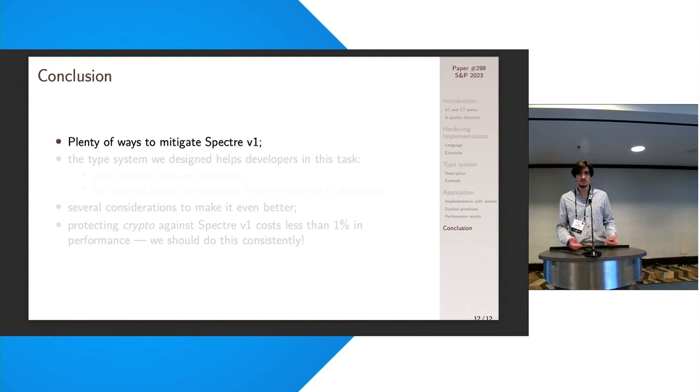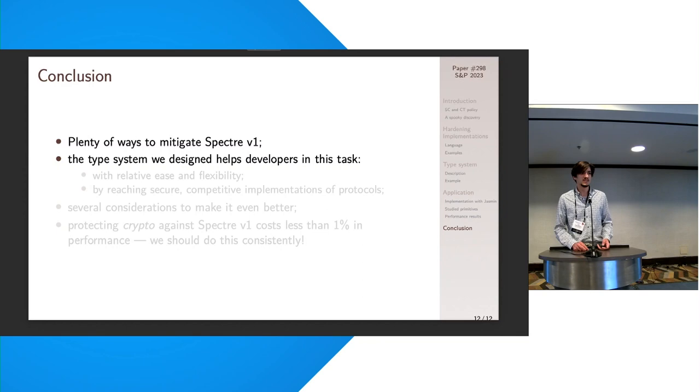So to conclude, of course, there are plenty of ways to mitigate Spectre v1, but the type system we design is clearly, apparently helps developers while we were testing it, with a certain good amount of ease and flexibility using the different methods I described.